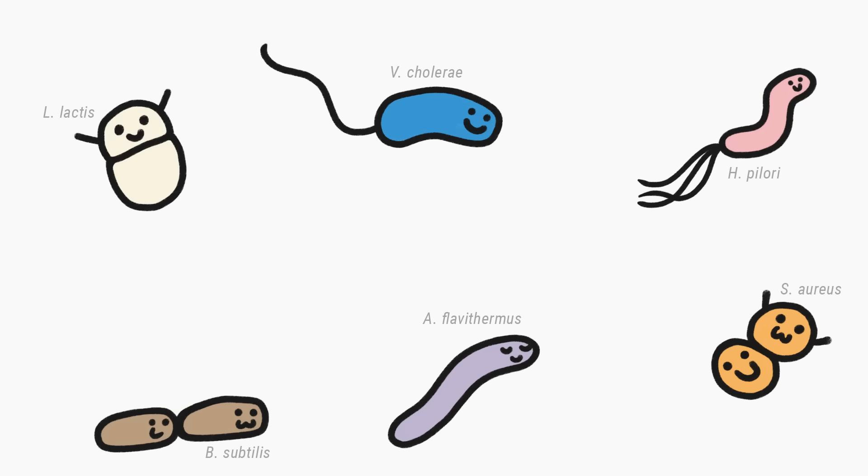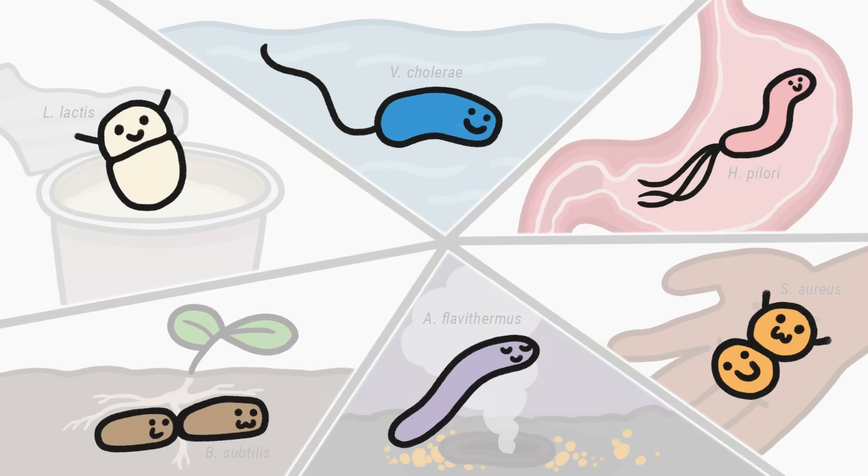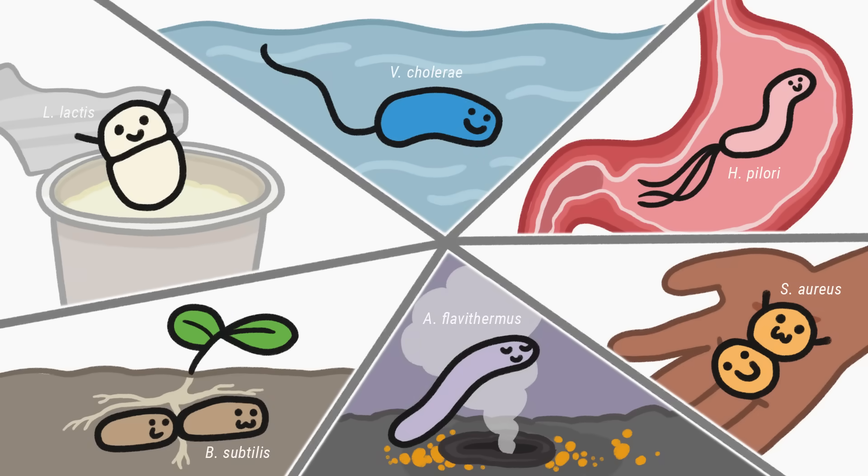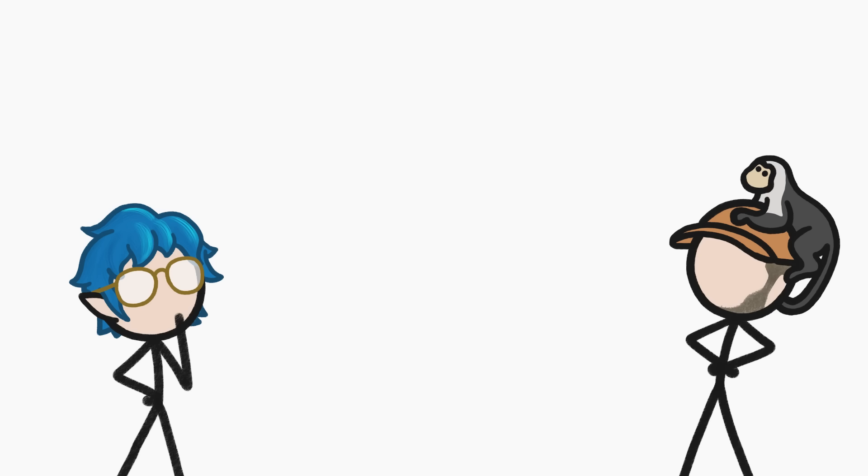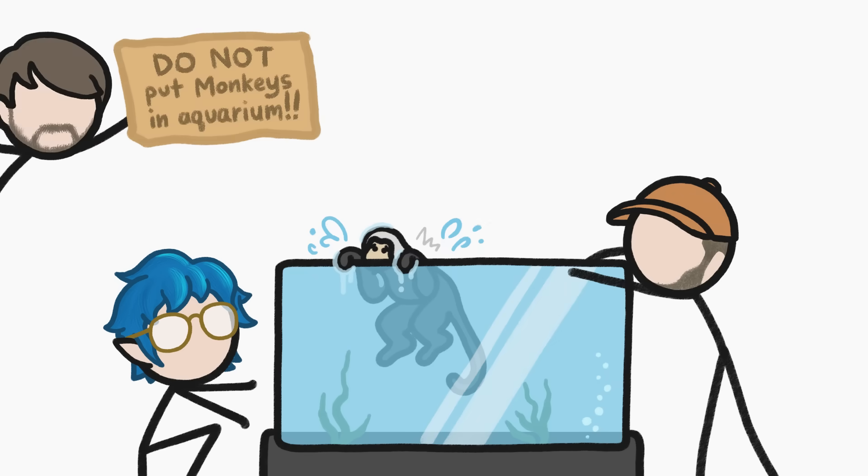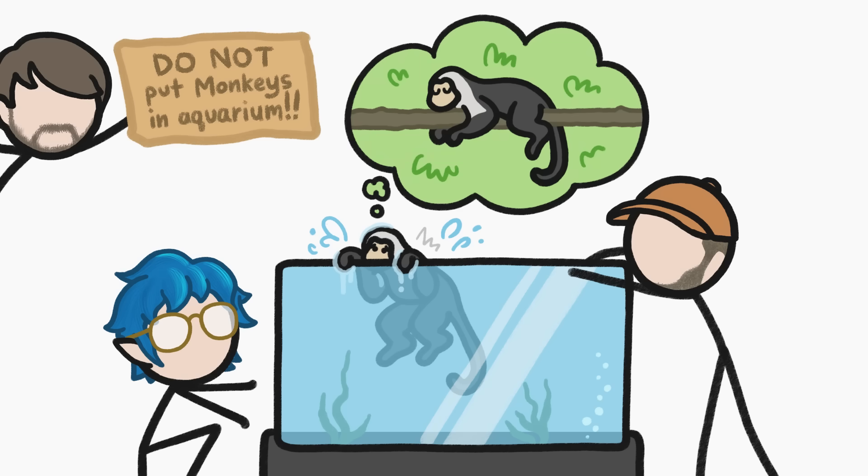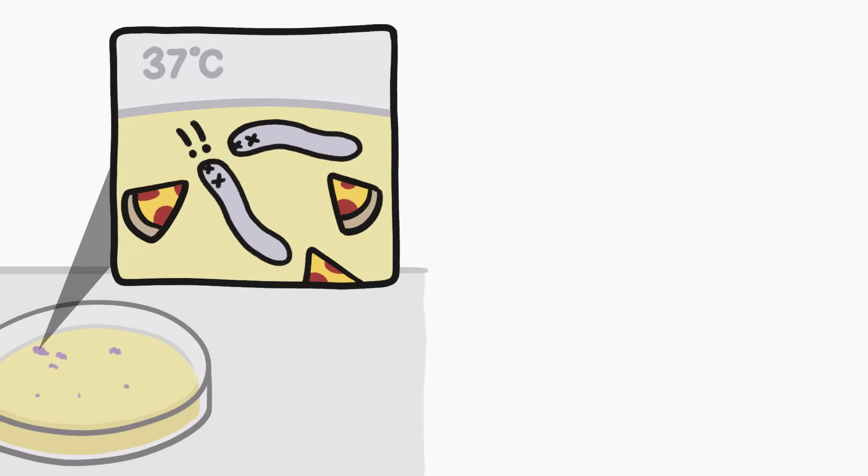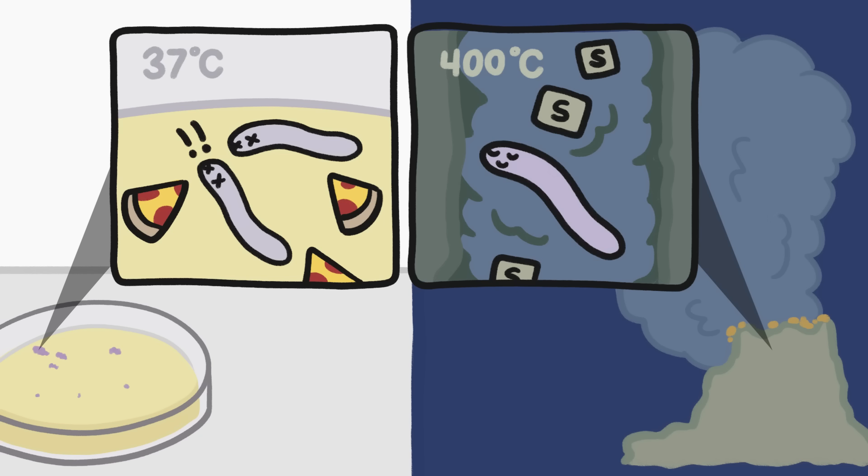I mean, consider animals for a second. You wouldn't build an aquarium, throw a monkey in it and be surprised that it isn't happy. An aquarium is just too different from a monkey's natural habitat. Similarly, most types of bacteria cannot grow on nutritional jello in a petri dish because it's just too different from their natural environment.